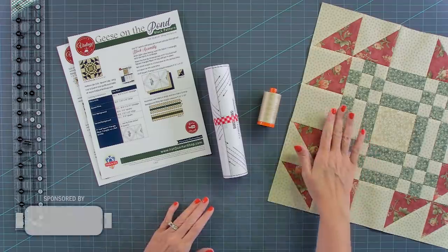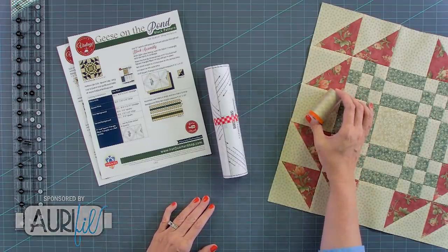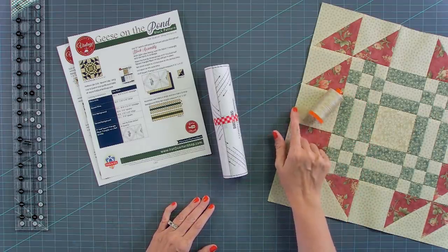Today we're going to be sewing with the threads that bind fabric by Blackbird Designs and when we make this we are going to be using Aurifil 2312 because it blends really nice with the background.